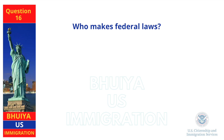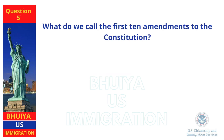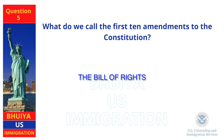Who makes federal laws? Congress. What do we call the first 10 amendments to the Constitution? The Bill of Rights.